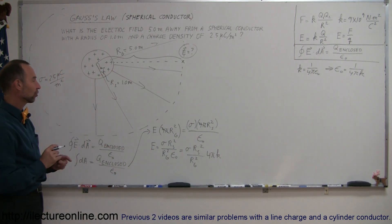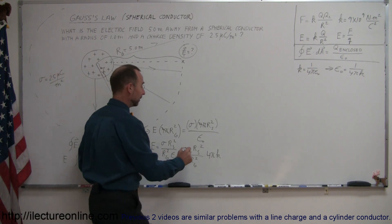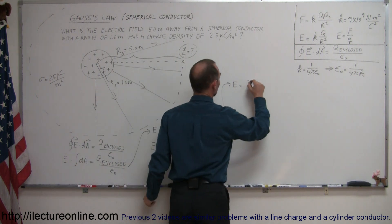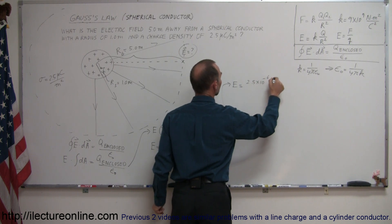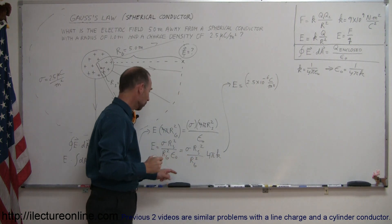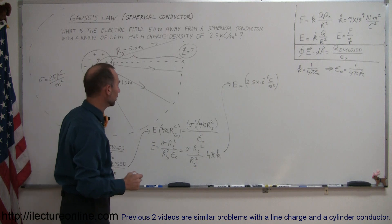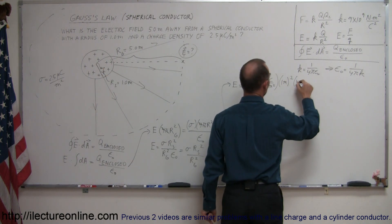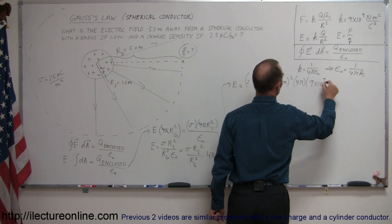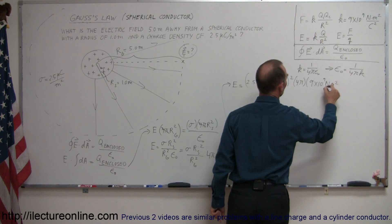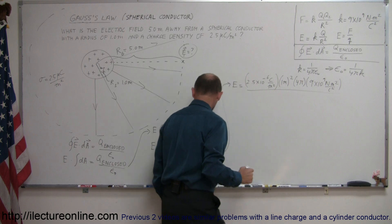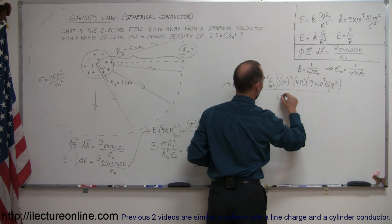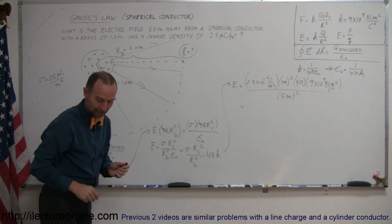Now we have an equation to find the electric field strength at the Gaussian surface. Plugging in values: sigma is 2.5 times 10 to the minus 6 coulombs per square meter, r sub s is 1 meter squared, multiplied by 4π and k which is 9 times 10 to the 9th newtons meters squared per coulomb squared, all divided by r sub g squared which is 5 meters squared, giving 25 in the denominator.